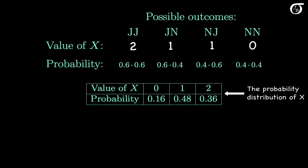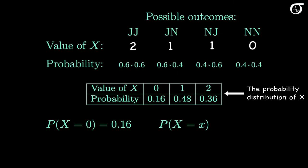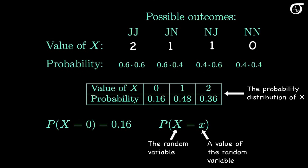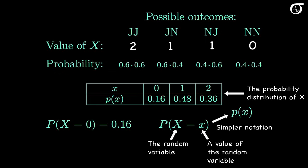We can now read probabilities off the table. For example, the probability the random variable x takes on the value 0 is 0.16. In general notation, we speak of the probability that random variable X takes on the value little x. Capital X represents the random variable, and lowercase x represents a value of the random variable. We often use simpler notation p(x), which means the same thing — it's shorthand for the probability that X equals little x. In the table we might change the column headers from 'value of x and probability' to 'x and p(x)'.